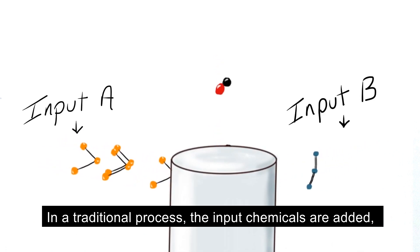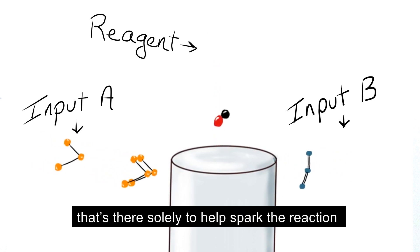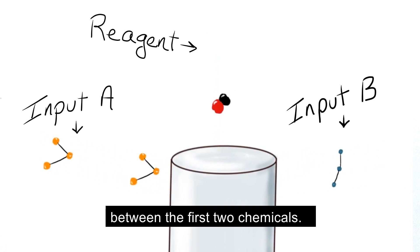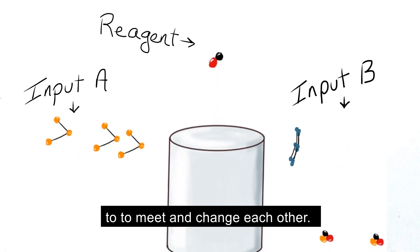In a traditional process, the input chemicals are added, along with a reagent. A reagent is an additional chemical that's there solely to help spark the reaction between the first two chemicals. It provides the extra push they need to meet and change each other.